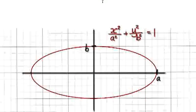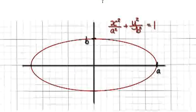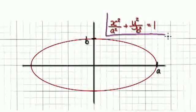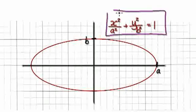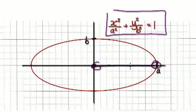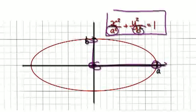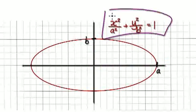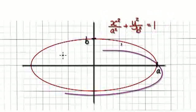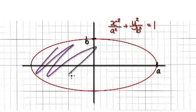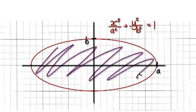In this video, we're going to work out the area of an ellipse by using trigonometric substitution. The equation of an ellipse is given by this, where the distance here is a and the distance here is b. If you follow this equation, it will give you this ellipse. We are going to work out the area of this ellipse.